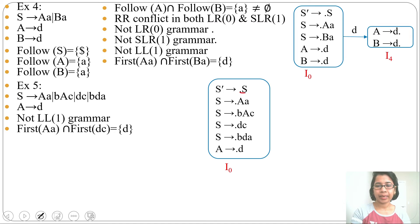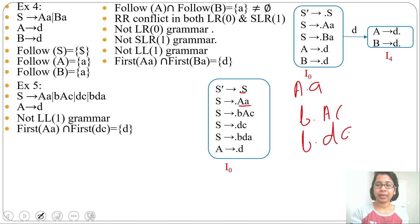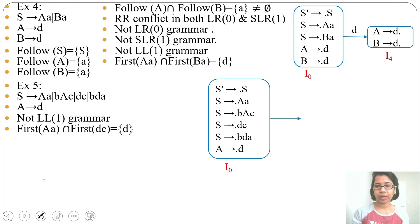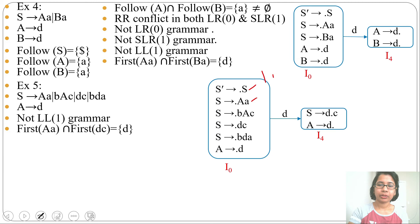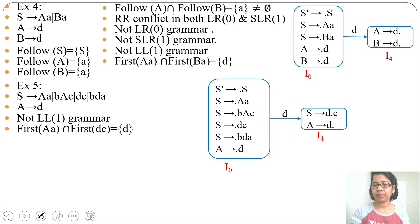For checking conflict we do go-to transitions. By S it will accept (i1). By 'a' it will go to i2 with just one production A → a•A — no chances of conflict. By 'b' it will go to i3 where productions will be B → b•Ac and B → b•dA — no reduction, so no chances of conflict. By 'd' it will go to i4 where productions will be S → d•c and A → d•.